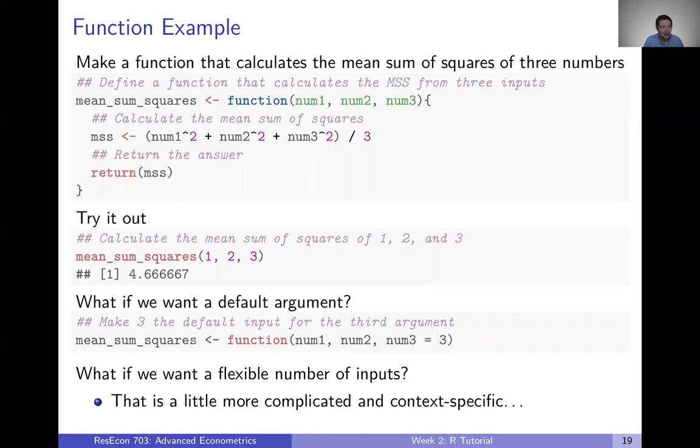Let's make a function that calculates the mean sum of squares of three numbers, takes in three numbers and it calculates the mean sum of squares and then returns the answer. So let's look at the syntax here. We're going to create this new function object called mean sum squares. We're going to use this is how you specify, define an object. It's called the assign operator. And you're saying whatever's on the right, we're going to assign that to what's on the left. So we're assigning this function and everything associated with it to the mean sum squares function object.